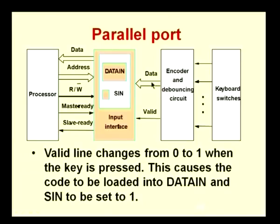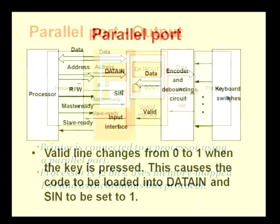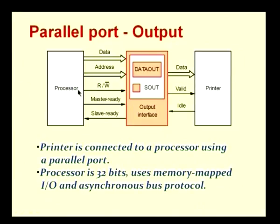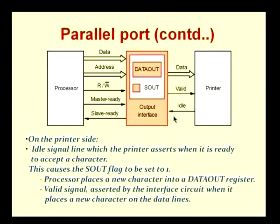For an output operation the flow of data is from the processor to an output device — for example, a printer. The processor side of the interface is similar: address lines, data lines, read/write signal, master ready, and slave ready. Only the direction of the data lines is reversed — data flows from the processor to the output interface. On the printer side of the interface there is one additional signal: an idle signal in addition to the data lines and a valid line.